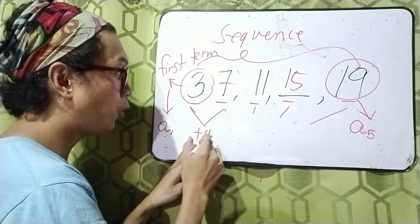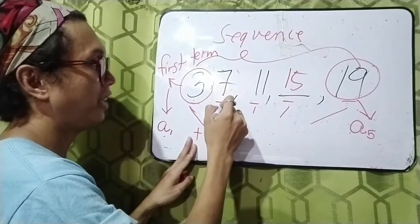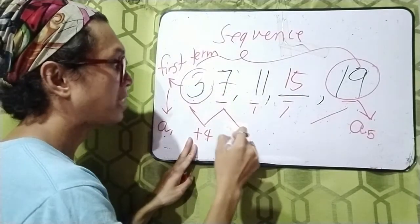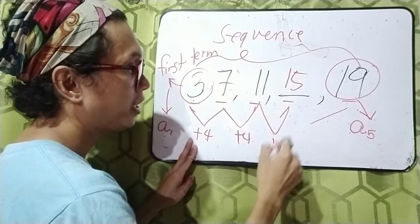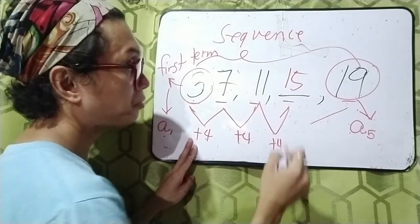I think you have seen the pattern that we're going to add 4 to get the next term. So, we have 3 plus 4, that is 7. Then after that, 7 plus 4 is 11. Then 11 plus 4 is 15.